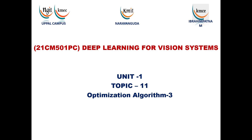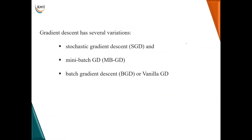Hello all. In today's session we will be discussing different variants of the gradient descent algorithm. We have discussed gradient descent in the previous session and how this algorithm tries to find the updated weight where the error function is minimum. These are the different variations: stochastic gradient descent, which takes random training examples to find the forward and backward pass; mini-batch gradient descent; and batch gradient descent, also called vanilla gradient descent.